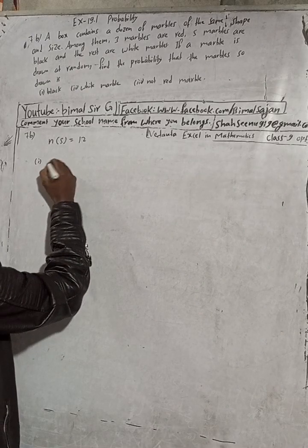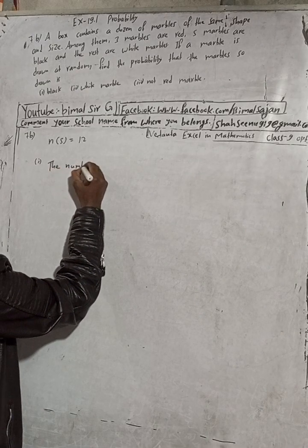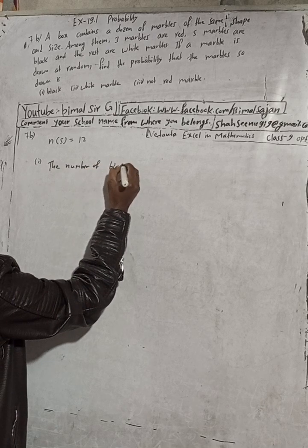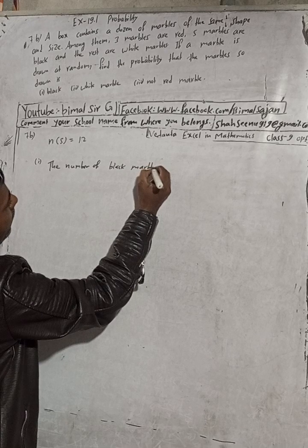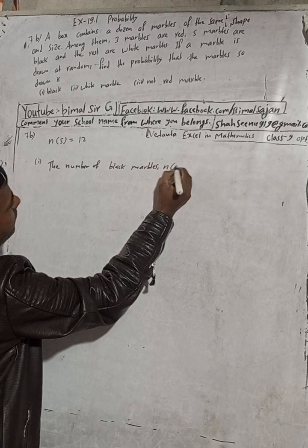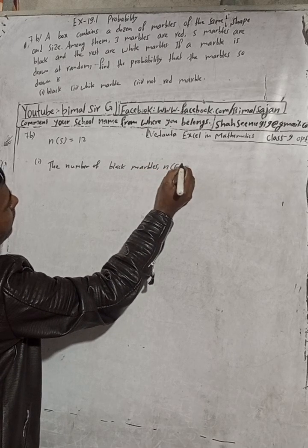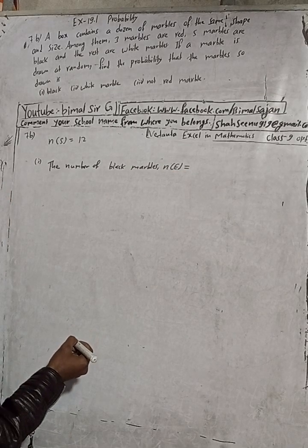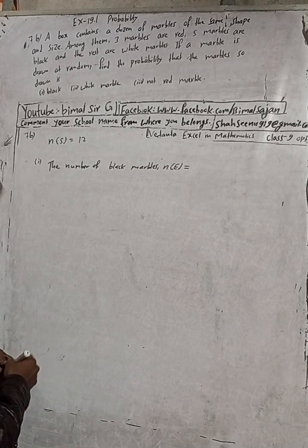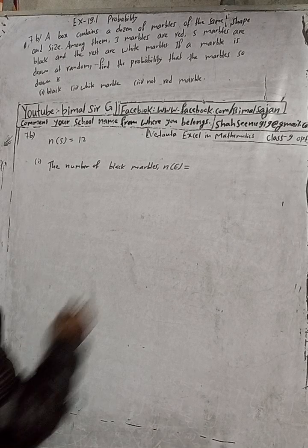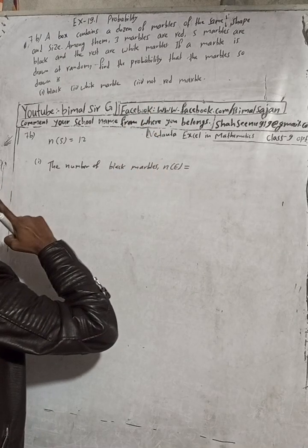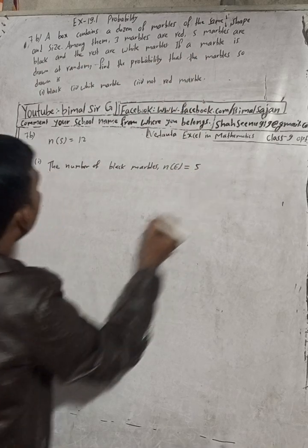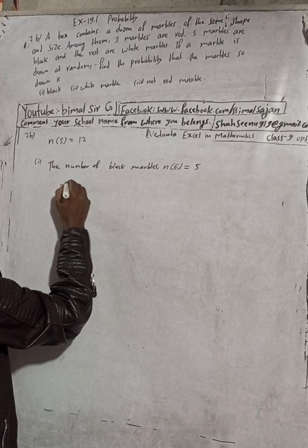Part one: the number of black marbles. The total marbles are 12. Among them, five marbles are black. So the number of black marbles is equal to five.